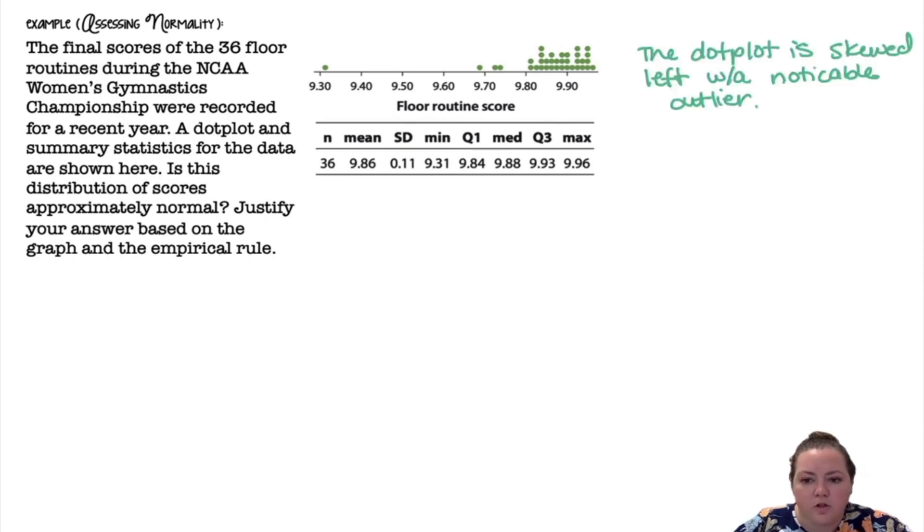So first of all, the dot plot is skewed to the left with a noticeable outlier. So I'm leaning towards probably not, but I'm going to check to see if approximately 68% of the data lies within one standard deviation. So I'm going to take my mean, which is 9.86 plus one standard deviation, which a standard deviation is 0.11. And I'm going to do the mean minus one standard deviation. And so when I add and subtract a standard deviation to the mean, I get 9.75 and 9.97.